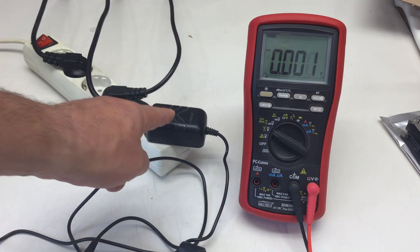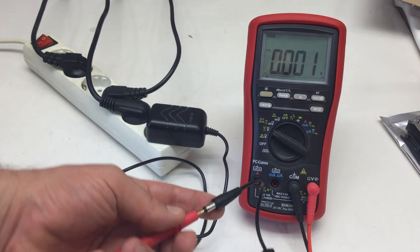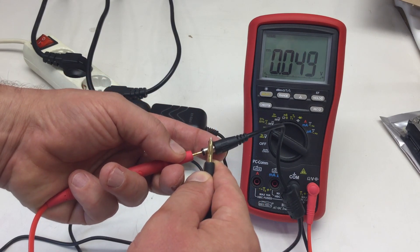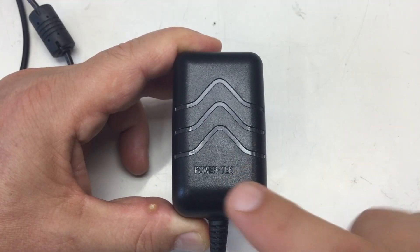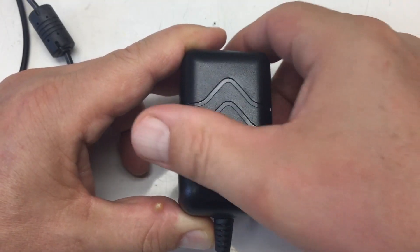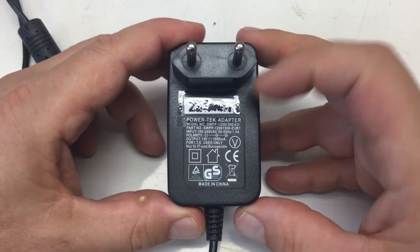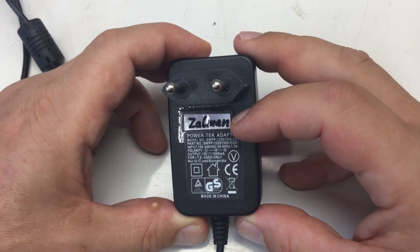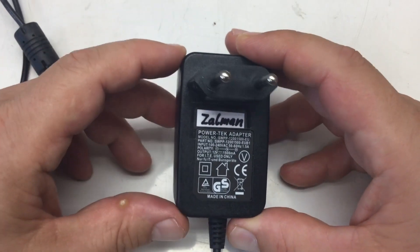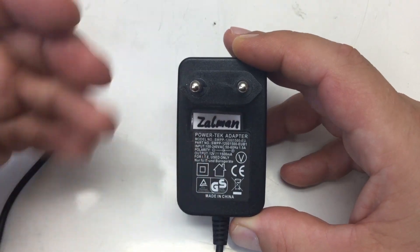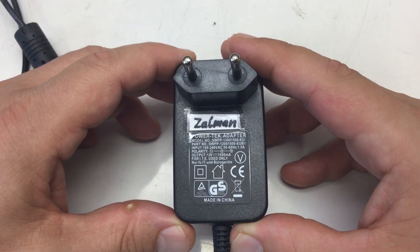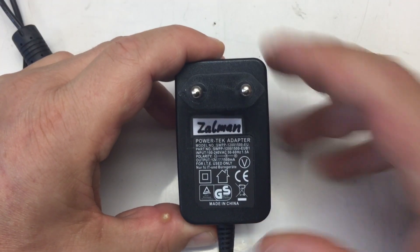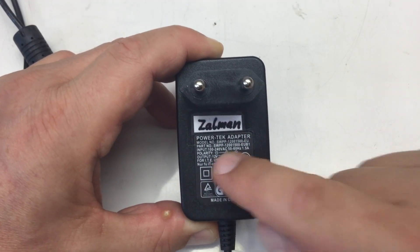Welcome back! This wall wart here is dead as a dodo. It was made by Powertech and it belonged to my Zalman external three and a half inch HDD cases. I have some videos about them or they featured in some videos of mine lately. Cards here, links in the description. Let's have a closer look at that label here.